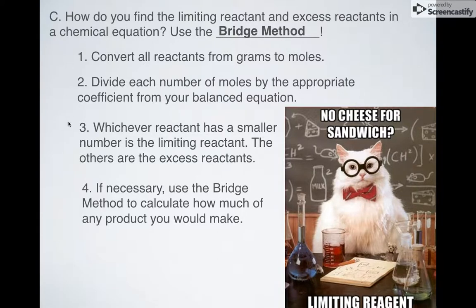And so in case you forgot the steps, these are the steps to the bridge method. The only difference is that once you've converted everything, in order to figure out which one of these is your limiting reactant, you're gonna need to divide each by the number of moles according to your balanced equation. Whichever one is smaller is your limiting reactant. Anything else, that would be your excess reactants. But the bridge method is the key.